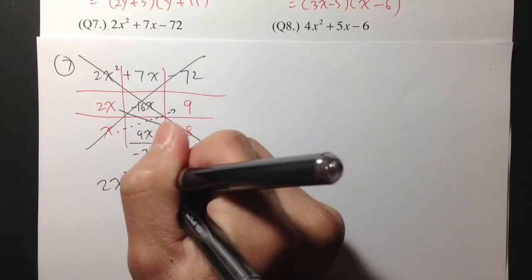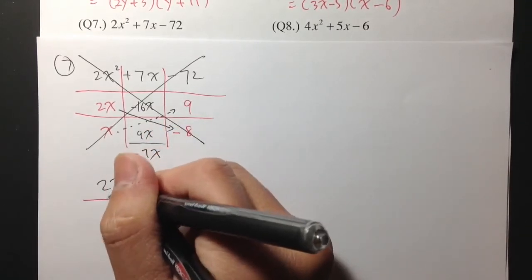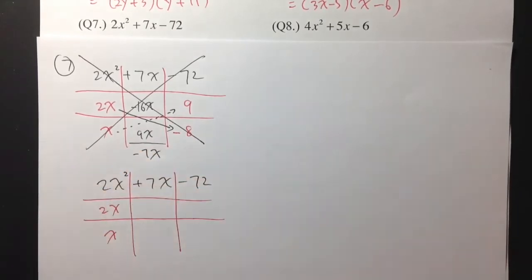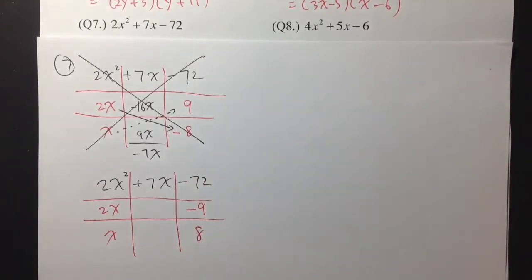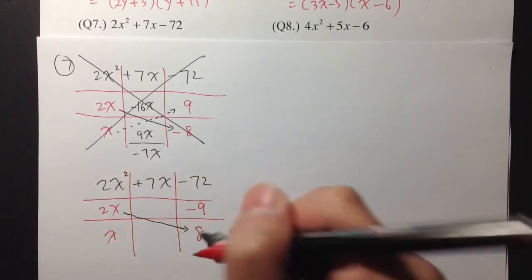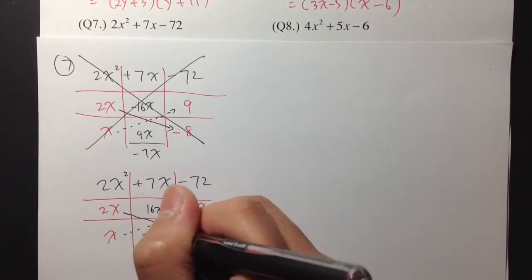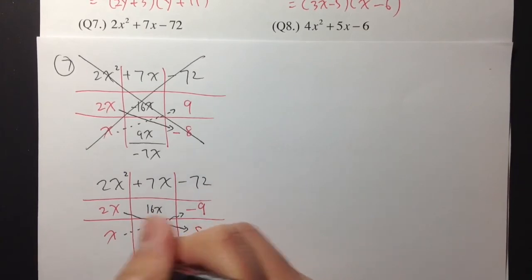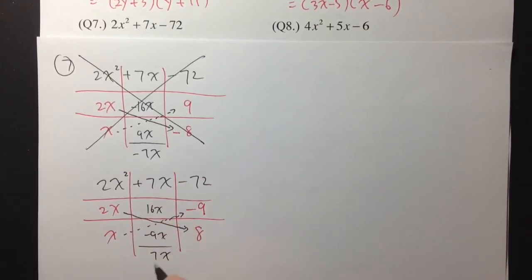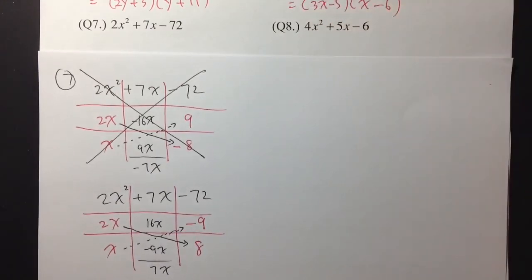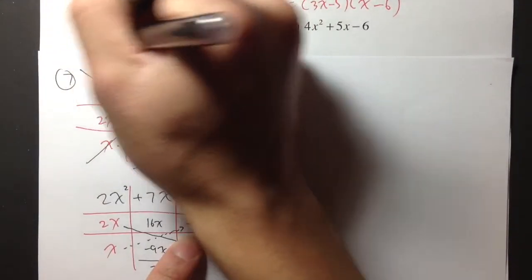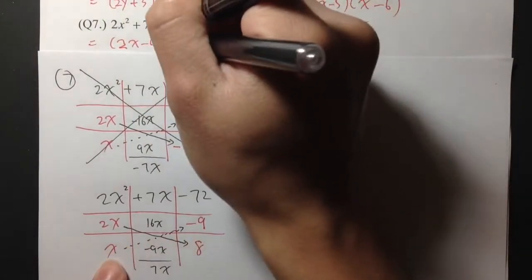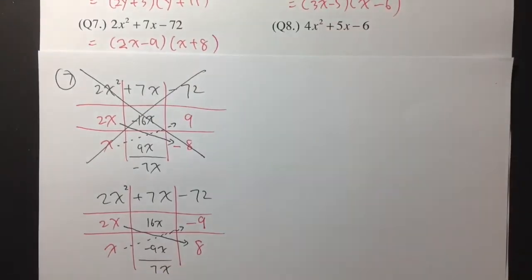Let me go over the correct one. I'll draw the tic-tac-toe box again: 2x here and x here. Let's make the 9 negative — negative 9 on one side — and put 8 on the other. 2x cross-multiplied with 8 is 16x. x times negative 9 is negative 9x. 16x minus 9x is exactly 7x — precisely the positive 7x we need in the middle. So for number 7, the answer is (2x − 9)(x + 8).